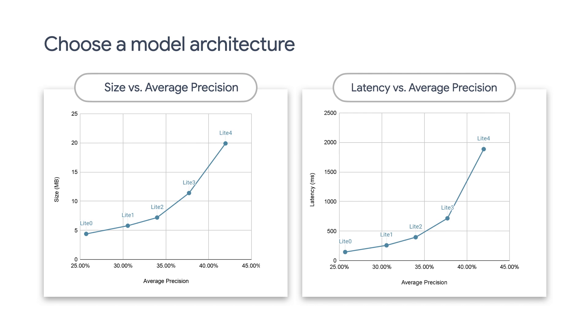The horizontal axis is the mean average precision, also called MAP, which evaluates the accuracy of the model. It was measured on the COCO object detection dataset. A larger value means the model is more accurate. By looking at the slope of the curve, you can see that to make the model more accurate, it needs to be significantly larger. You may see other model architectures that are more accurate than these models; however, the trade-off is that those models are too large to deploy on edge devices and can only be used on powerful servers.